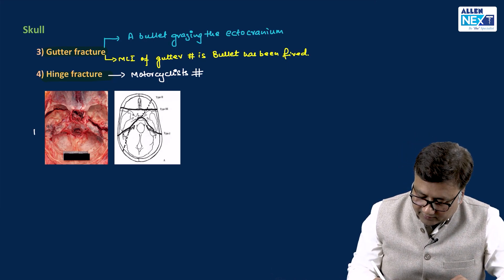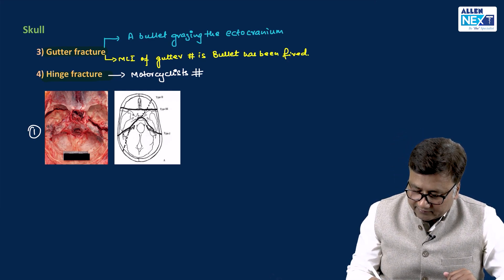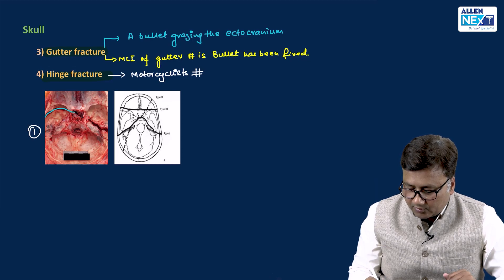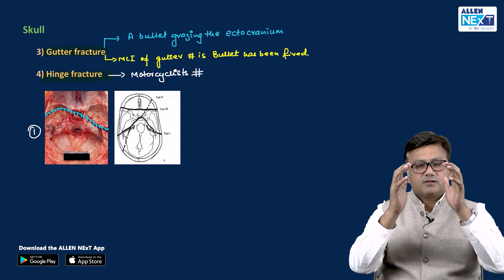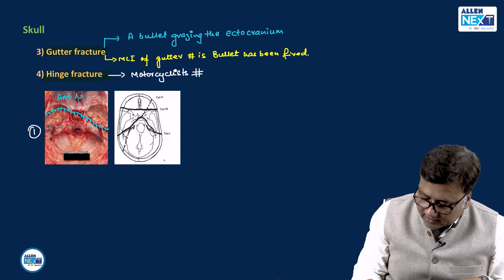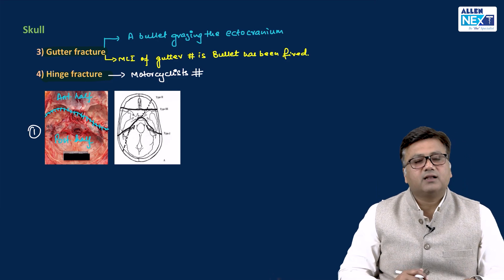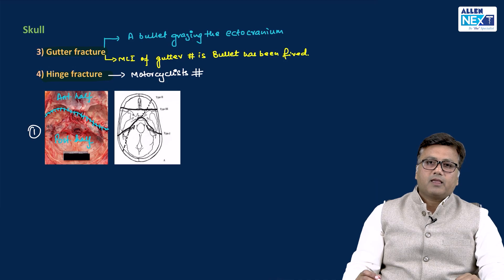A photograph shows a motorcyclist fracture in which there is a fracture line going from one middle cranial fossa through the body of sphenoid to the other middle cranial fossa. In this region the skull is fractured at the base, giving two halves — an anterior half and a posterior half — while the vault remains intact. The skull hinges because of the crack in the base; that is called a hinge fracture.